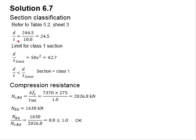Check against the limits of the class. For class 1 is 50 epsilon square, then you are getting 42.7. You find that the d per t ratio is less than the limit for class 1. Therefore, the entire section is considered as class 1.